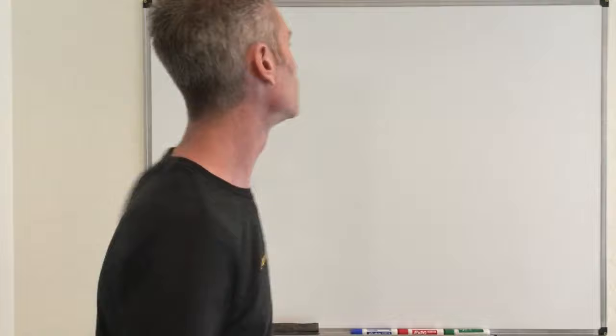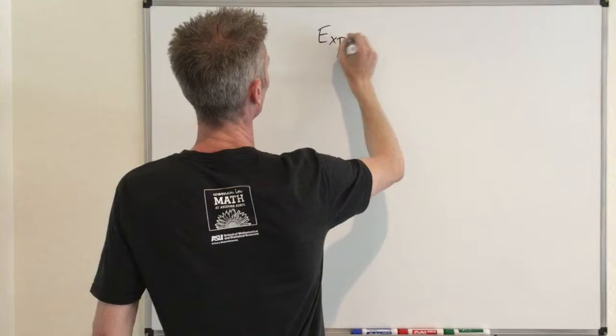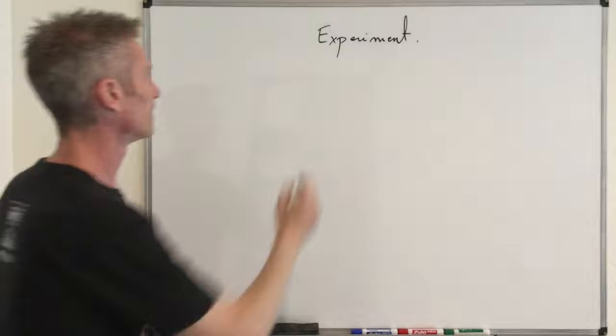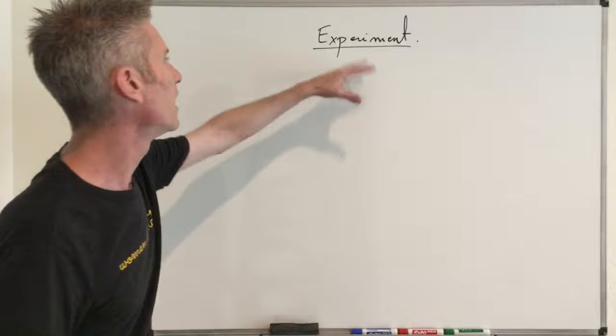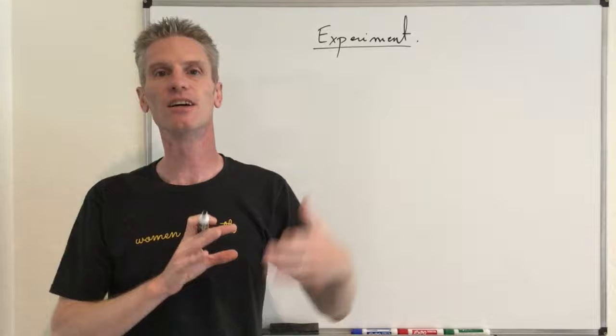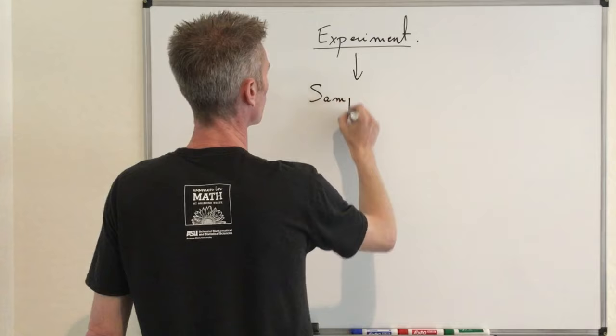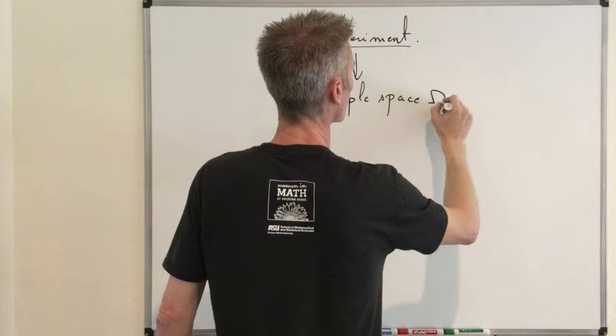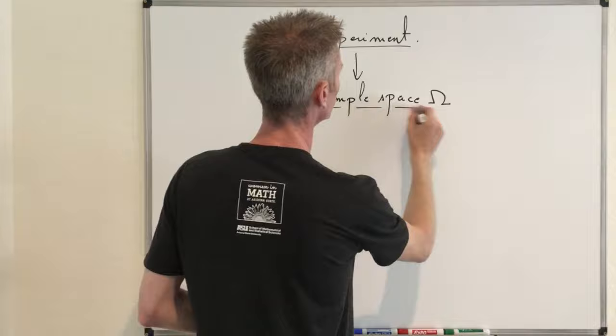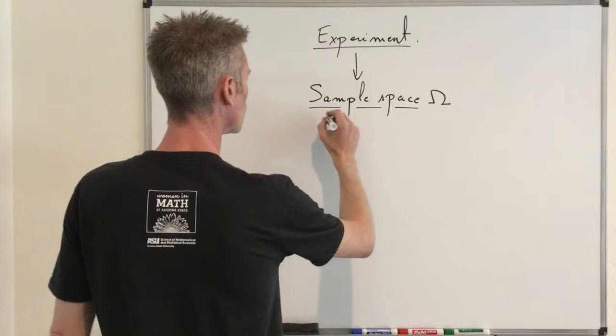So first, what is a random variable? As usual, we are going to start with an experiment — that's always the first step in probability theory. That's a technical word meaning basically that you do something at random. Then to each experiment, you can associate a set called Omega, that's the sample space — the set of all possible outcomes. From that, we look at probabilities or conditional probabilities of events.